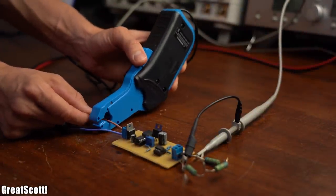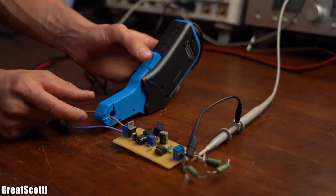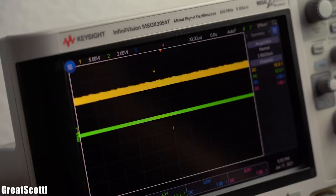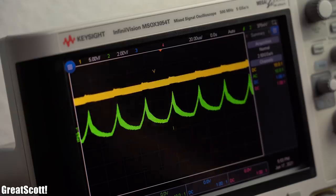As you probably have seen in one of my previous videos, I like to use this current clamp to visualize the current flow in a circuit on my oscilloscope.